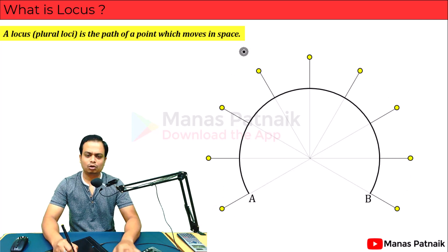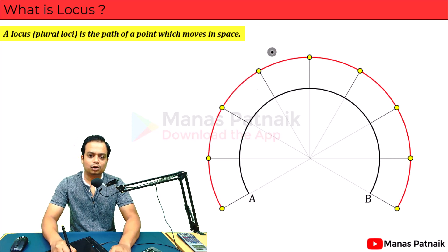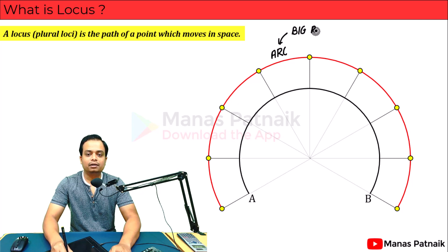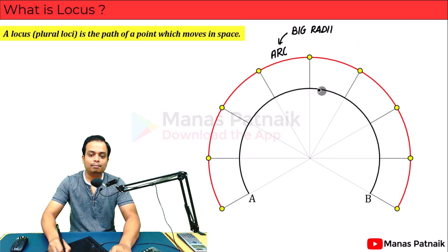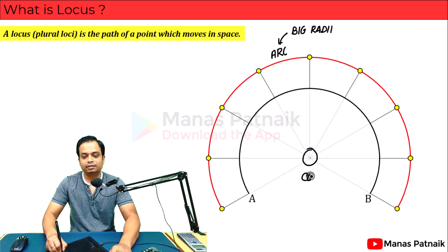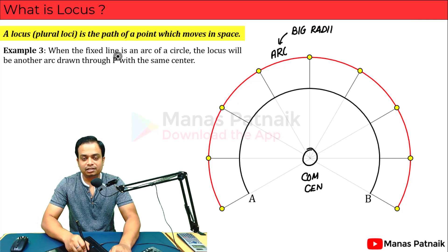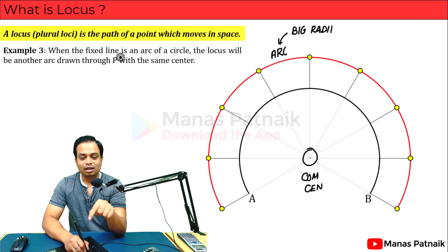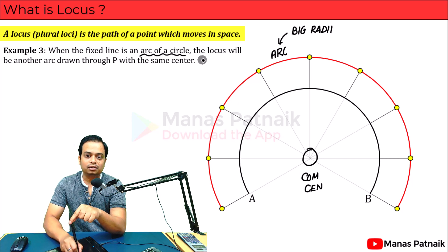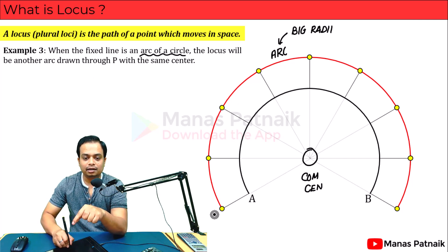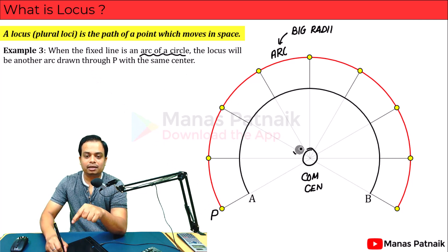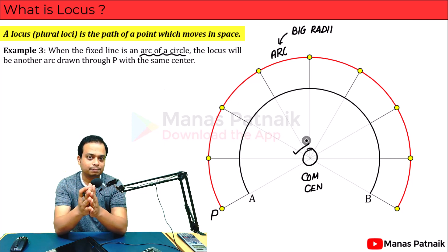If the point keeps following these rules, and we show all its positions in one picture, when we join all the points in sequence, the path — which is nothing but the locus — is another arc. The new arc has a bigger radius; that is the only difference. Both the red arc (locus) and the original black arc share a common center. So when the fixed reference is an arc of a circle, the locus will be another arc drawn through P with the same center.